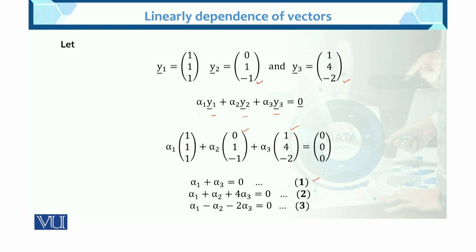Now consider equation 1: 1·alpha 1 + 0·alpha 2 + 1·alpha 3 = 0. Similarly, equation 2: 1·alpha 1 + 1·alpha 2 + 4·alpha 3 = 0. And equation 3: 1·alpha 1 − 1·alpha 2 − 2·alpha 3 = 0. From equation 1, alpha 1 equals minus alpha 3.